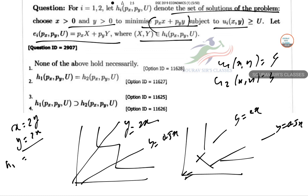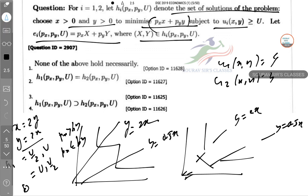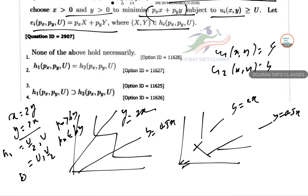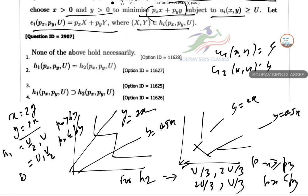From this solve we get h₁ giving you u/2, u for pₓ greater than pᵧ, and u, u/2 for pₓ less than or equal to pᵧ. And h₂, this is giving you u/3, 2u/3 and 2u/3, interchangingly u/3 when price of x greater than or equal to price of y and pₓ less than pᵧ. As you can see none of them are matching, so none of the above is the answer.